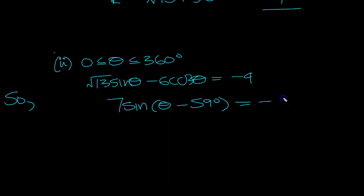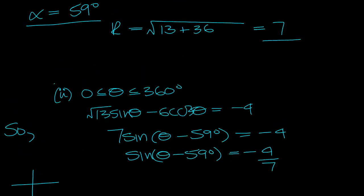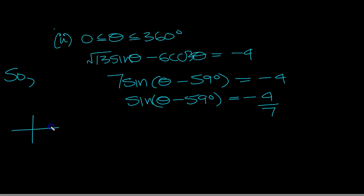This is equal to minus 4, so sin theta minus 59 degrees is equal to minus 4 over 7. We're looking for theta between 0 and 360. So let's just draw a circle. Sin is negative here and here. This is 0 to 360. But the range we're looking at is from minus 59 round to 301 because it's theta minus 59.